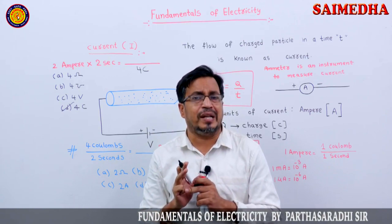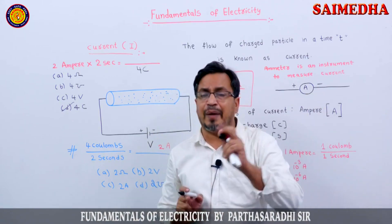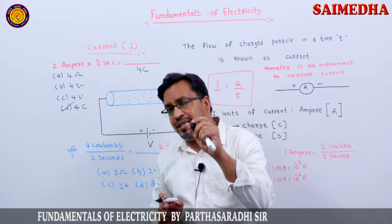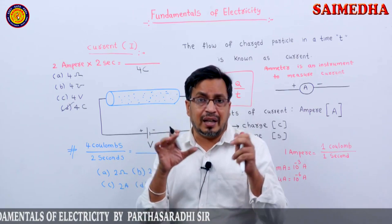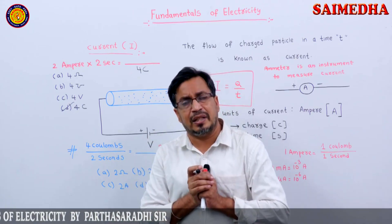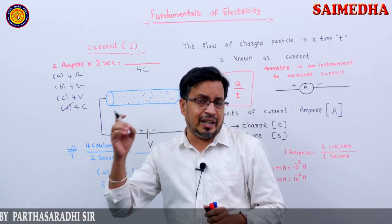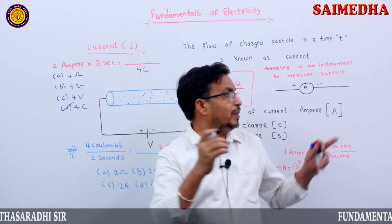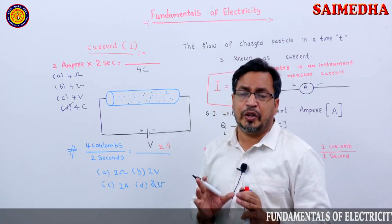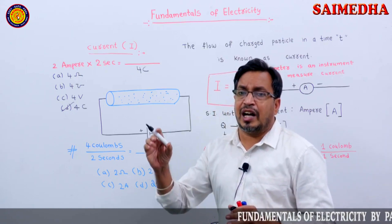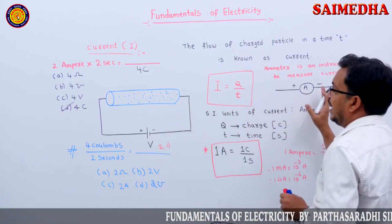Which instrument is used to measure current? Ammeter. This is the symbol of ammeter. Ammeter is always connected in series. The internal resistance is zero. When the charged particles are moving, the flow of charged particles is known as current.